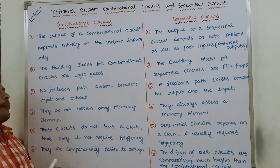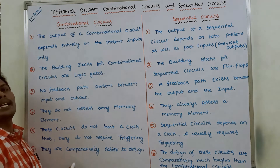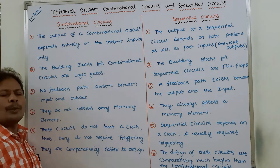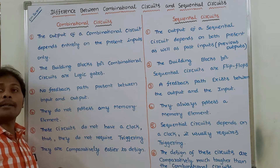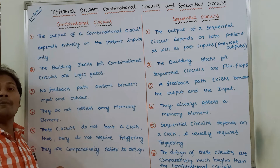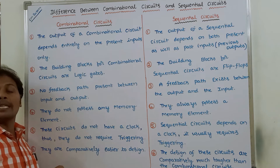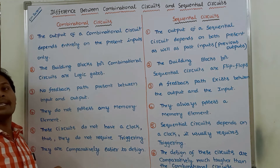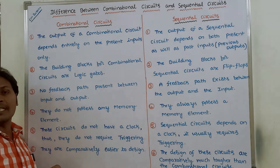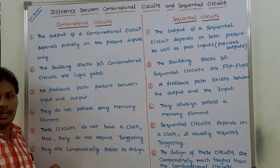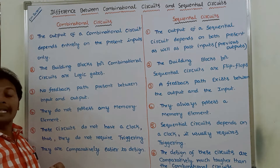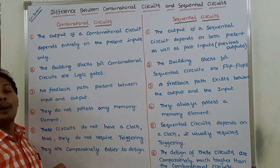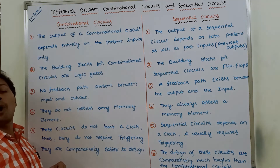Sixth point: combinational circuits are comparatively easier to design. To build combinational circuits, we have to use simple logic gates such as AND gate, OR gate, and NOT gate, and by using those gates, we can simply design the combinational circuits. Whereas in the case of sequential circuits, the design is much tougher than combinational circuits.